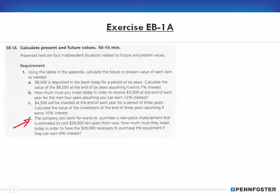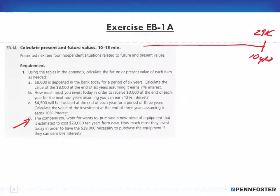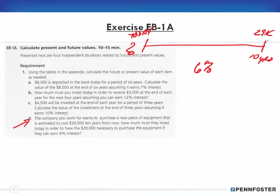Part (d): The company you work for wants to purchase a new piece of equipment estimated to cost $29,000 ten years from now. On the timeline, this is ten years out. How much must they invest today in order to have the $29,000 necessary to purchase the equipment if they can earn 6% interest? Since $29,000 is a lump sum needed in the future, I'll use the present value of a dollar table.